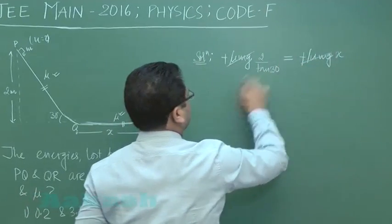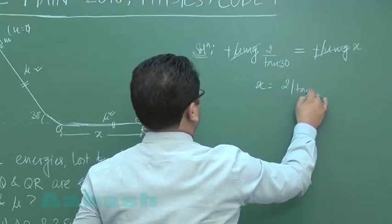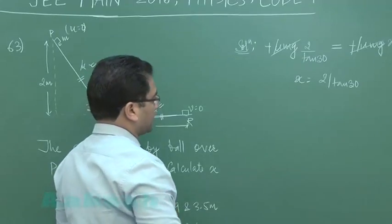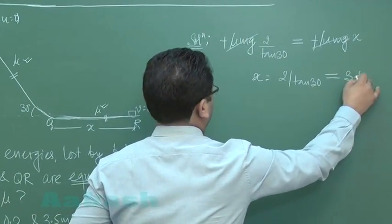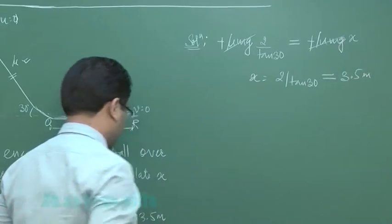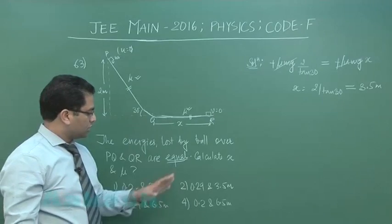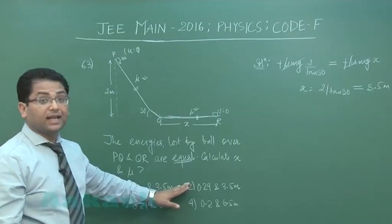Now this mu mg and mu mg gets cancelled, so you get X as 2 by tan 30. Tan 30 being 1 by root 3, you can put that value and this value of X comes very close to 3.5 meters. Now already these two options would be eliminated.